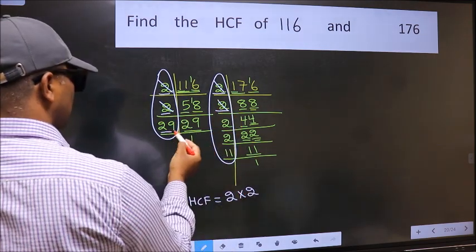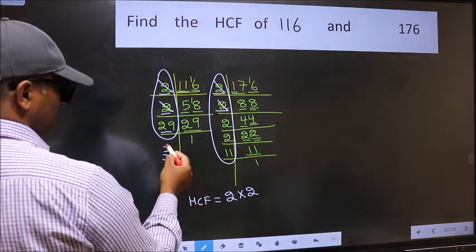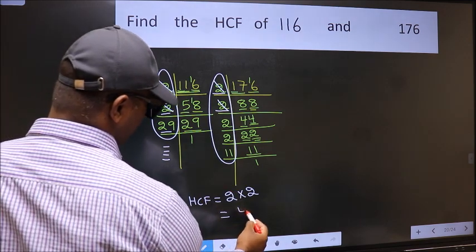Next number 29, do we have 29 here? No. No more numbers have been left out. So our HCF is 2×2=4. 4 is our HCF.